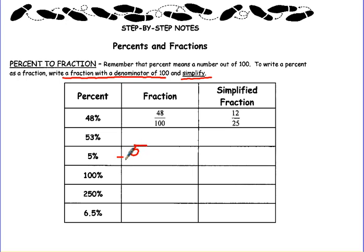5% means 5 out of 100. Divide by 5 on both the top and the bottom, and the simplified fraction is 1 twentieth.